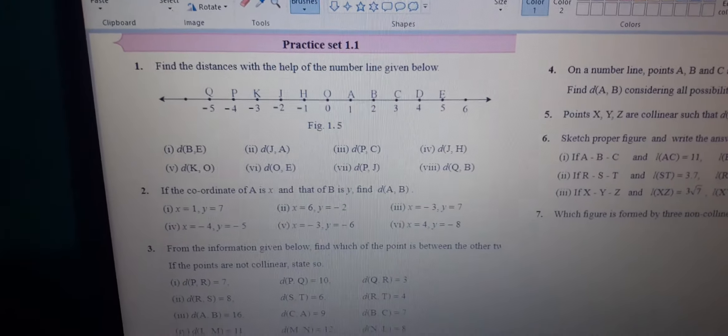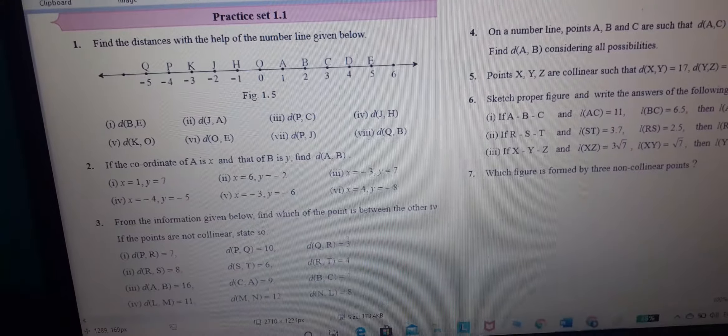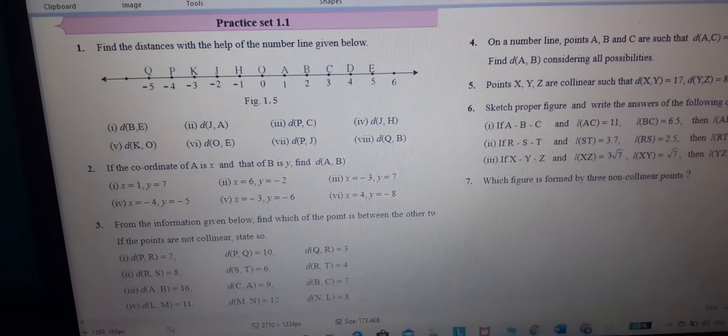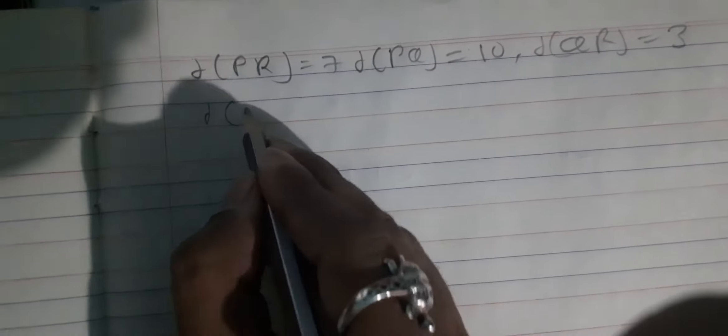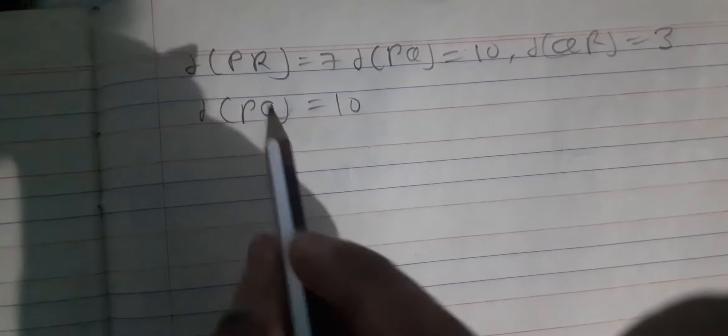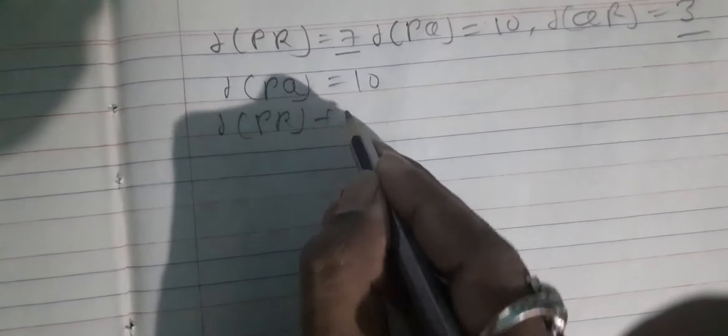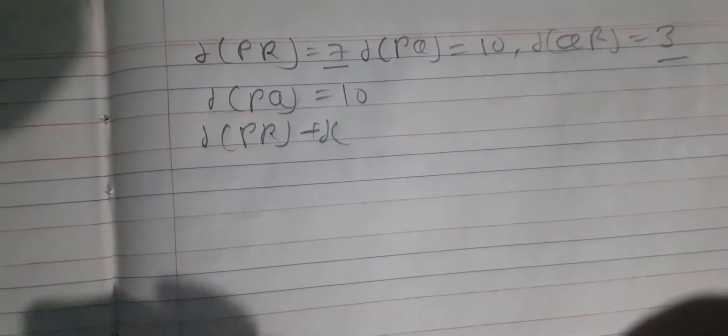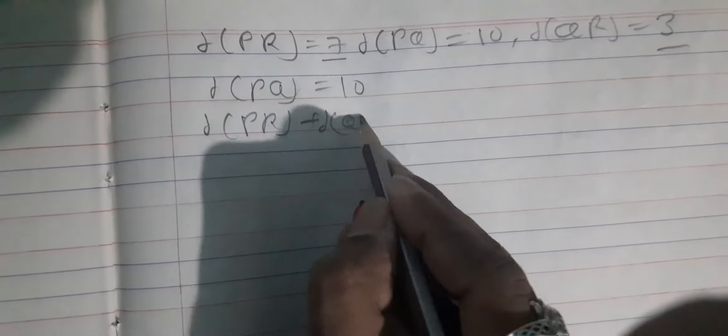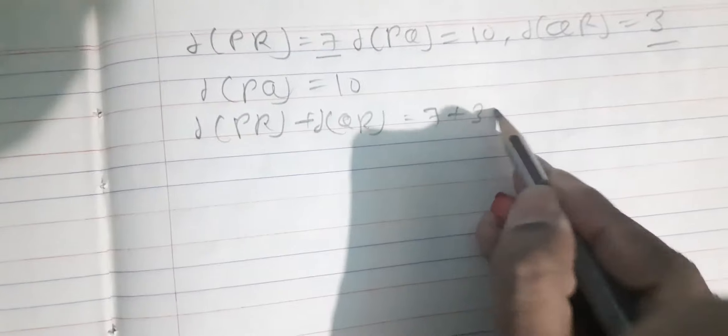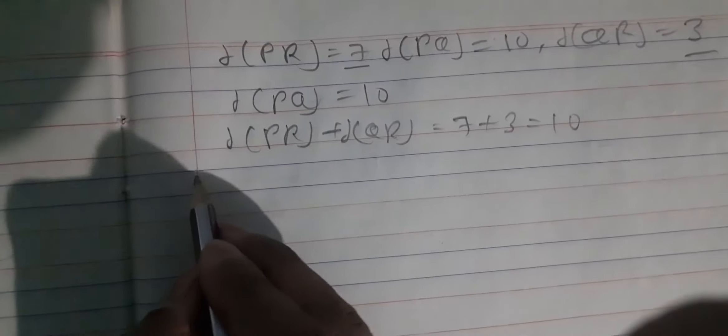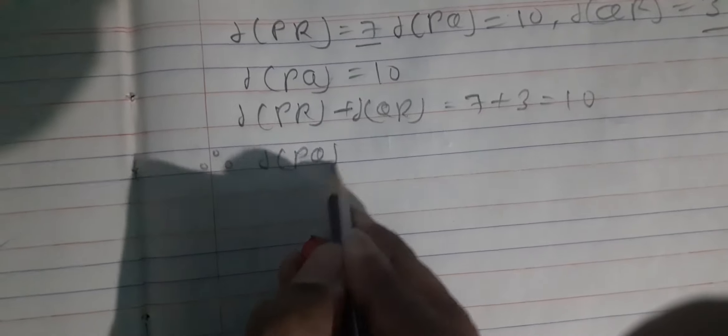Now come to the third question. From the information given below find which point is between the other two points. Distance PQ is equal to 10. Distance PR plus distance QR: 7 plus 3 is equal to 10.